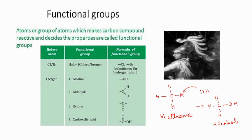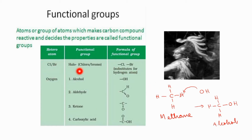So what are functional groups? These are atoms or groups of atoms that make the carbon compound reactive and decide its properties — they are called functional groups. Any group other than carbon and hydrogen present in a hydrocarbon compound is called a functional group. It may be a halo group, it may be alcohol, aldehyde, ketone, or carboxylic acid. Even a double bond or triple bond is also considered as a functional group. So functional groups are just like Alexander the Great.